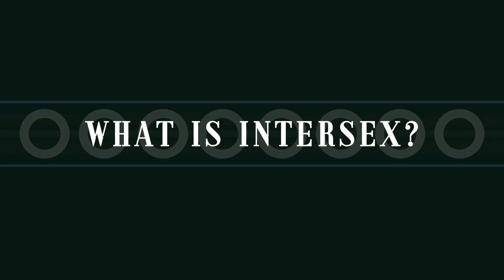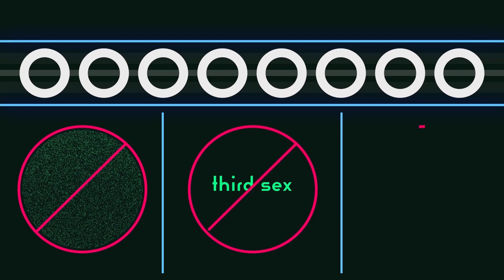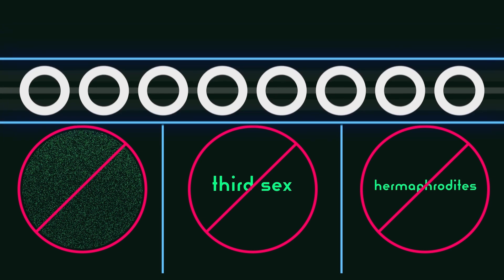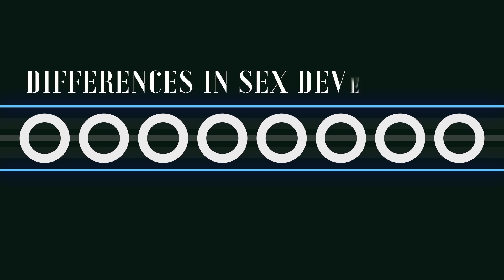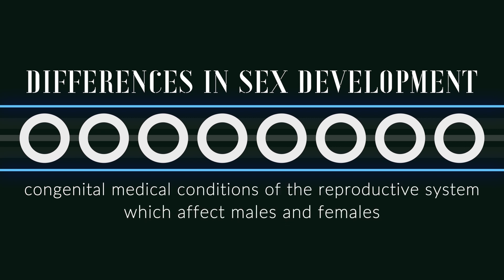What is intersex? Contrary to popular culture, intersex is not an amorphous mix of sex characteristics, or a third sex category. Nor does the term describe hermaphrodites, which are organisms who have both sets of functioning reproductive anatomy. Rather, intersex, or differences in sex development, is an umbrella term for separate congenital medical conditions of the reproductive system.